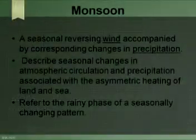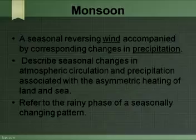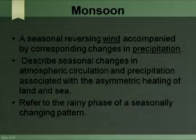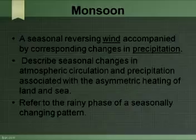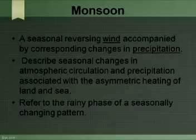Monsoon is traditionally defined as a seasonal reversing wind accompanied by corresponding changes in precipitation, but is now used to describe seasonal changes in atmospheric circulation and precipitation associated with the asymmetric heating of the land and sea. Usually, the term monsoon is used to refer to the rainy phase of a seasonally changing pattern, although technically there is also a dry phase.